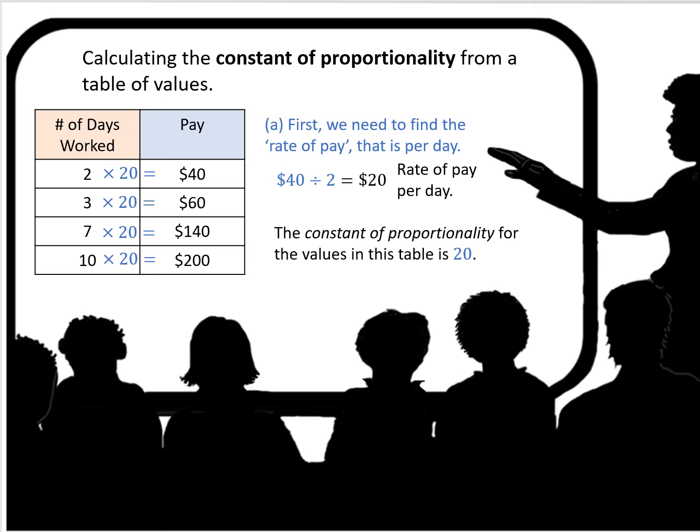So you can see that the constant, the thing that is the same for all of those corresponding values, is the multiplier 20.